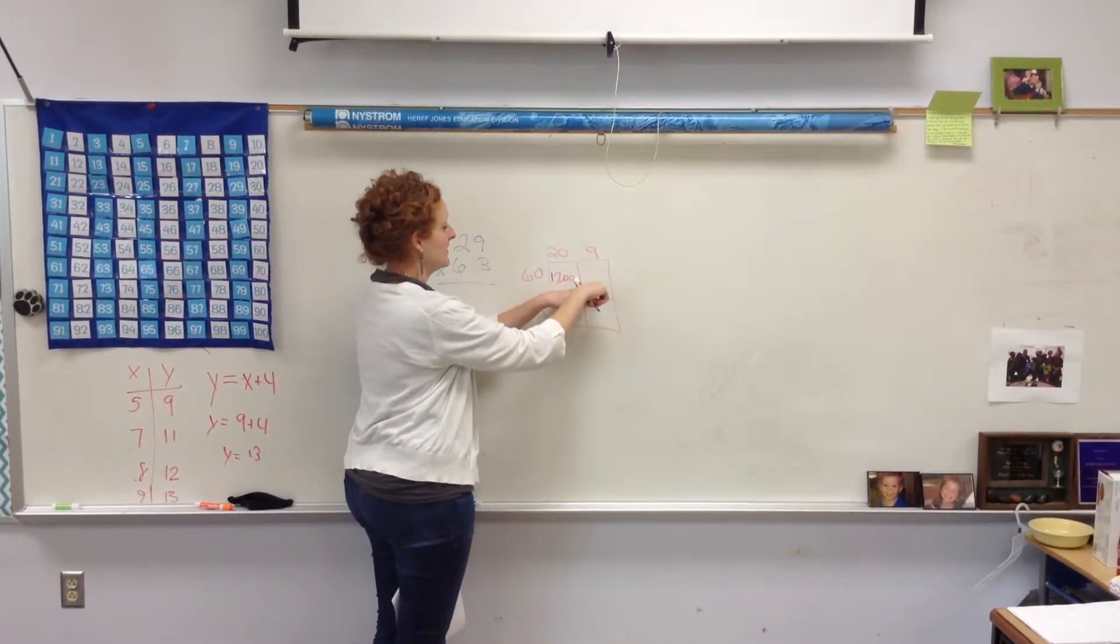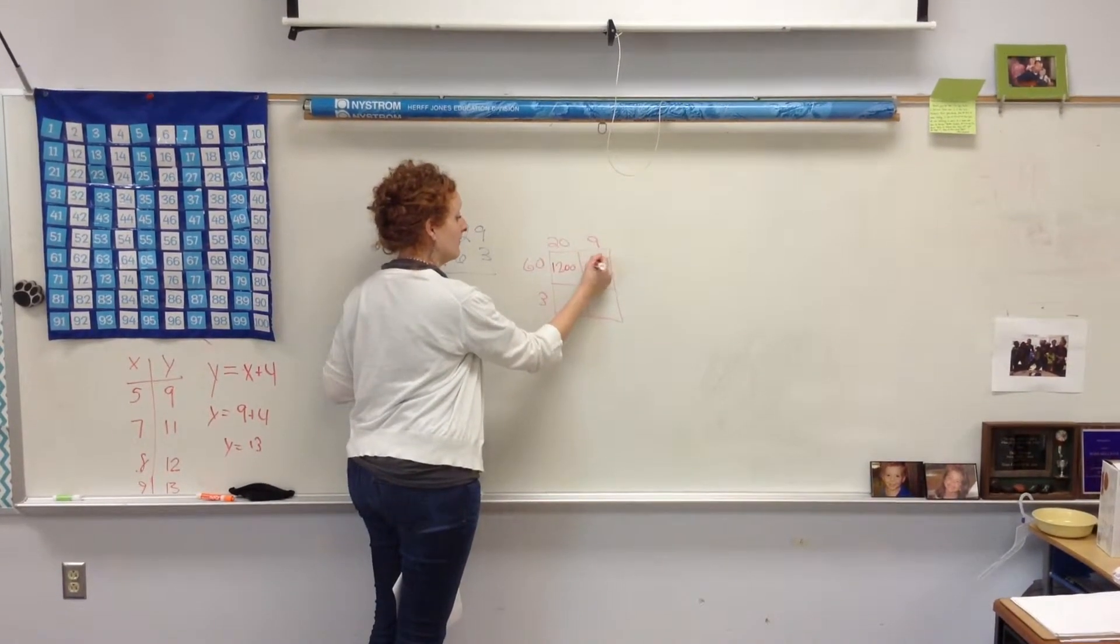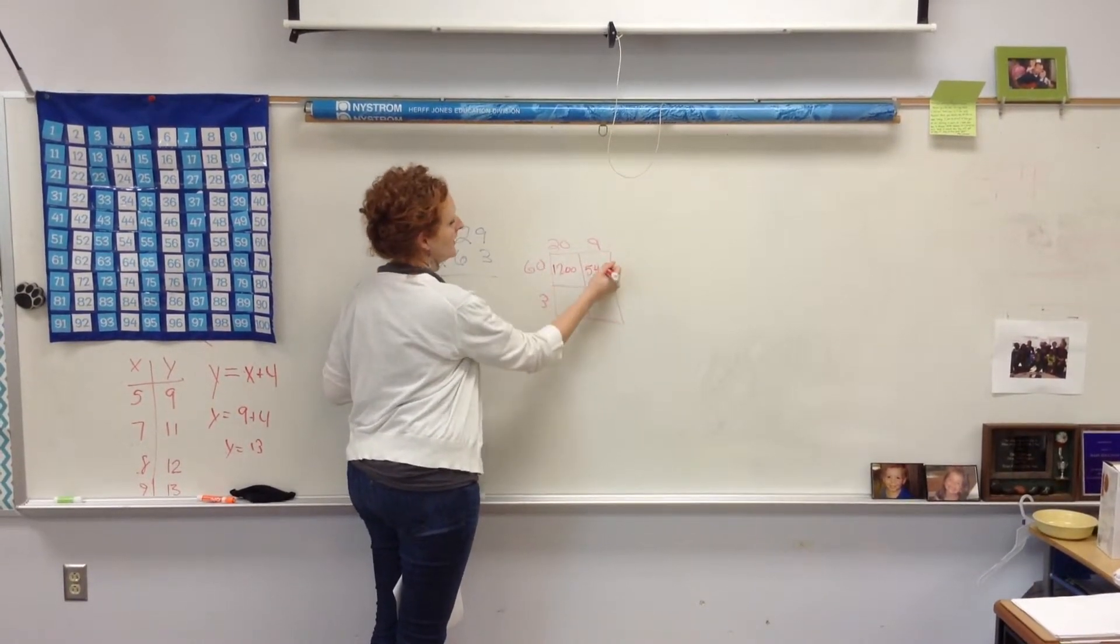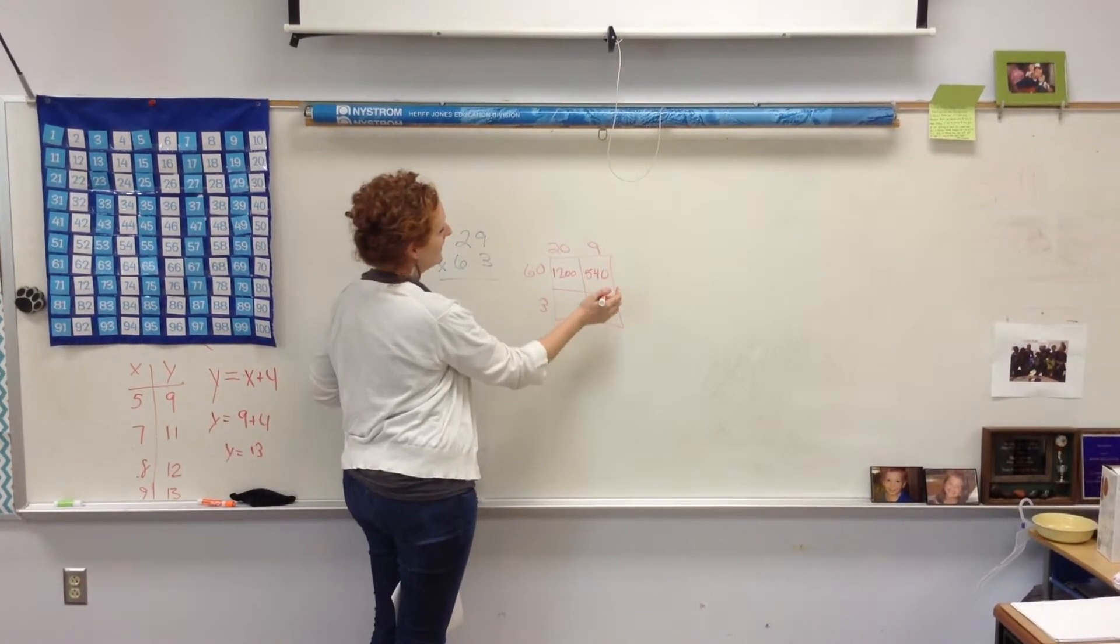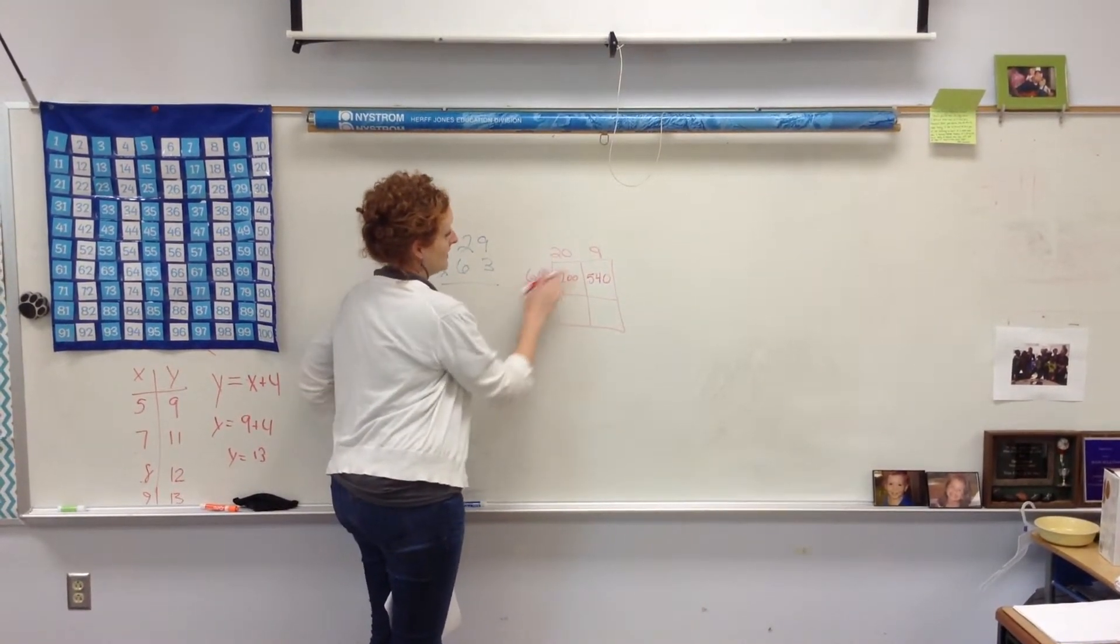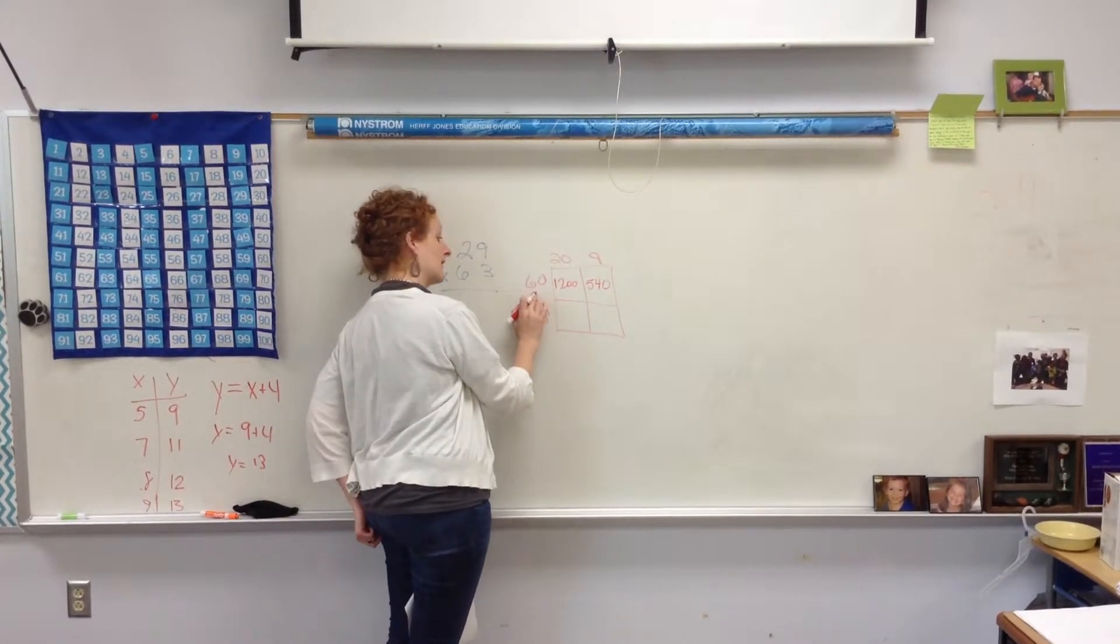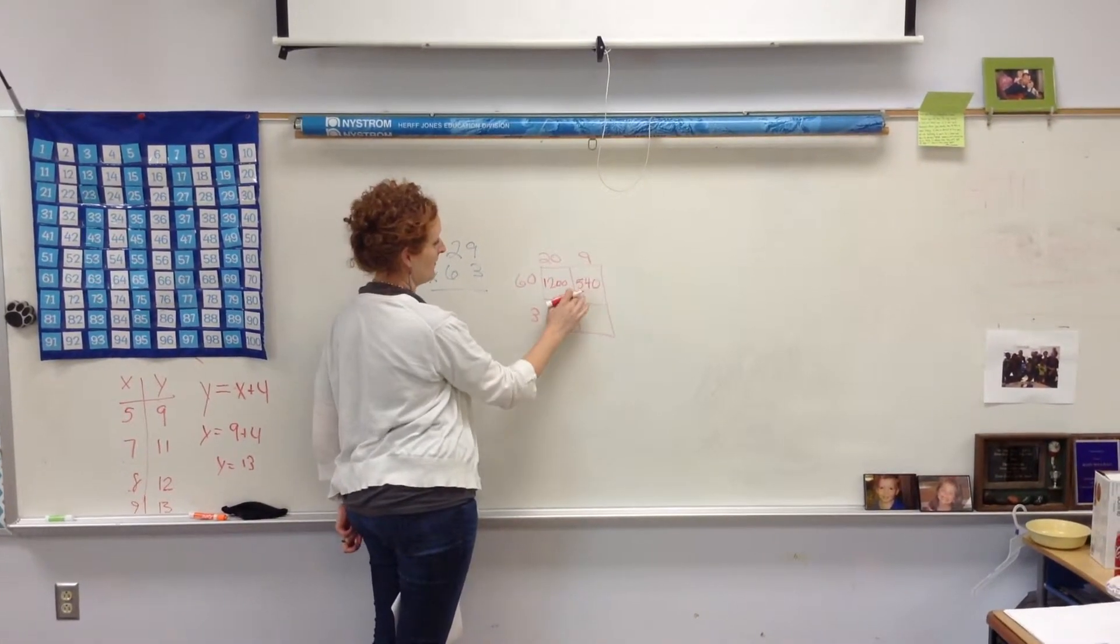Then, 9 times 60, which would be 54. I've got one zero here, I add one zero to the back of it. Because a 10 times a 1 will equal that 10 group. So, 6 tens times 9 ones would be 540.